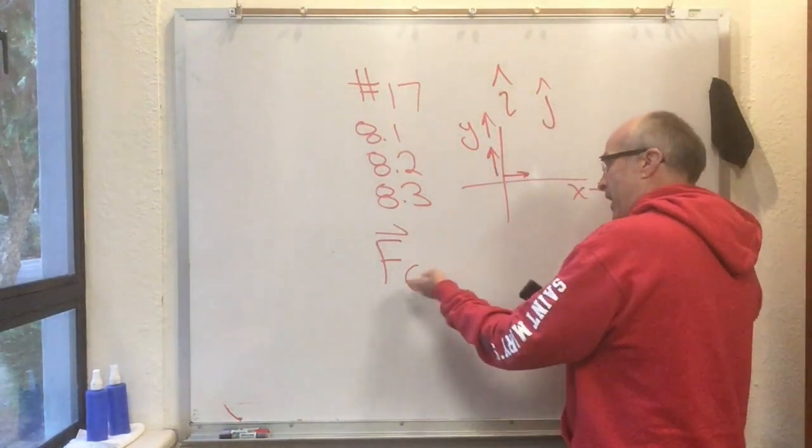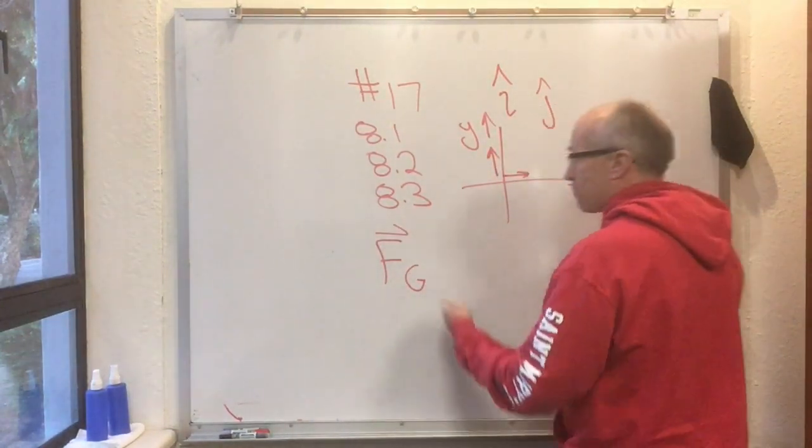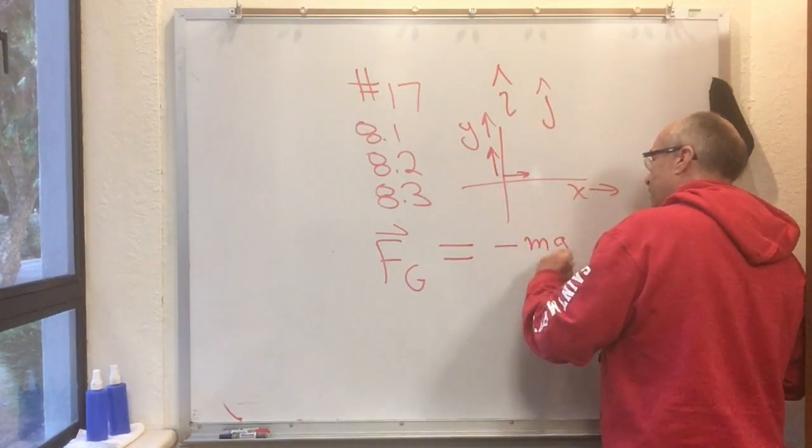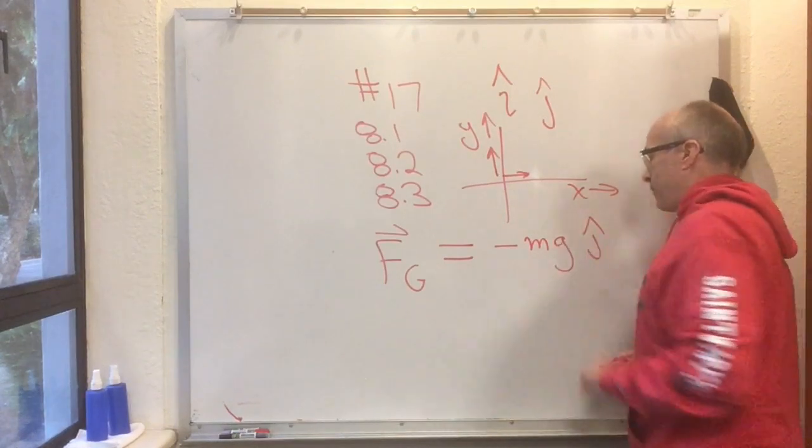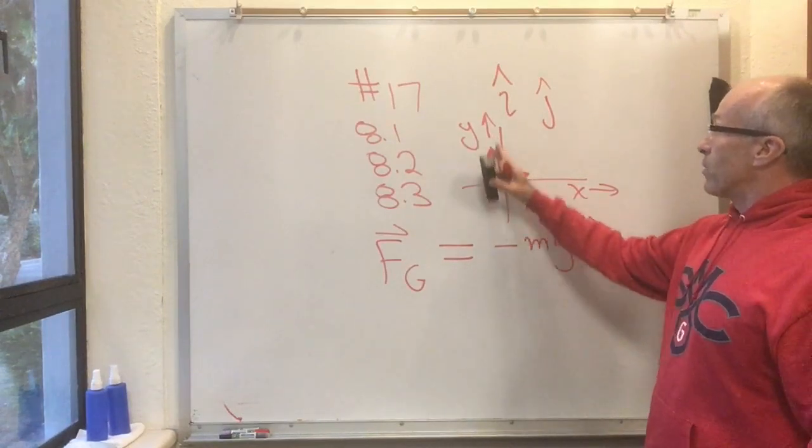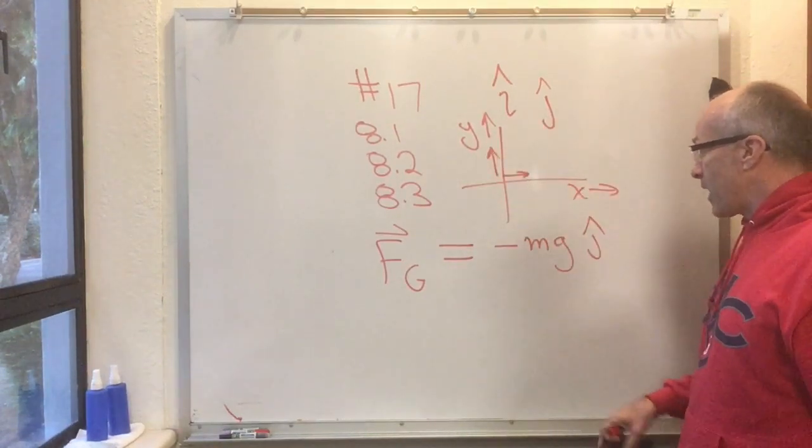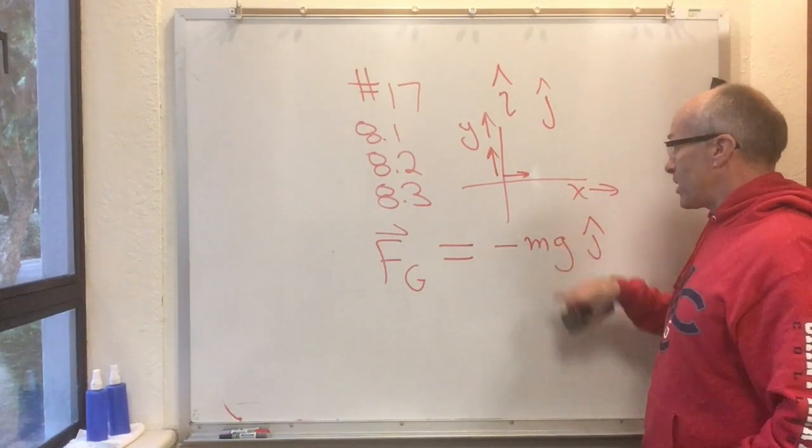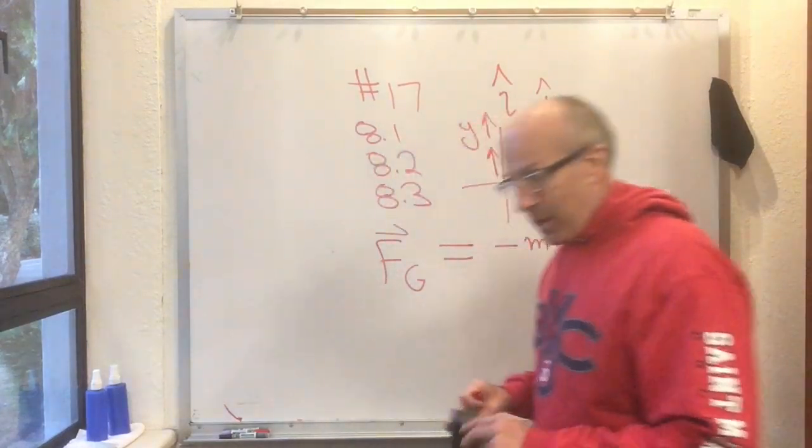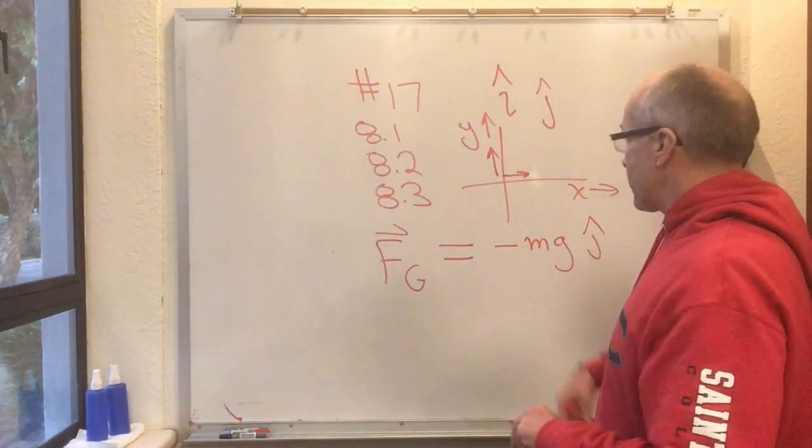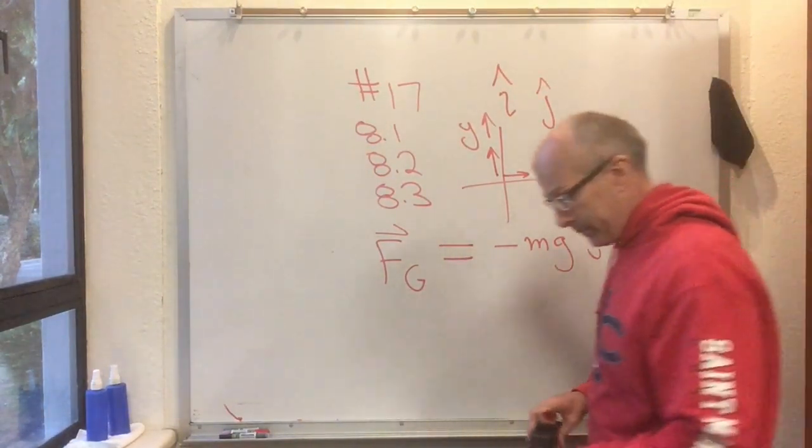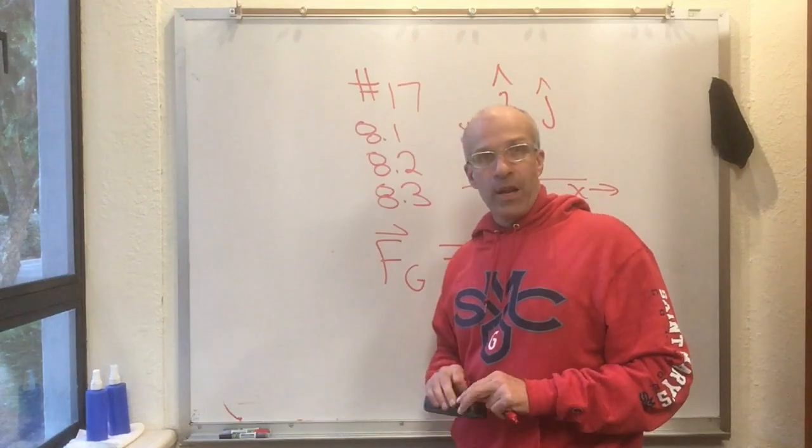Instead of writing the y component of F_g is minus mg, we can write that F_g equals minus mg times j-hat. In other words, it points in the opposite direction of this unit vector j-hat, which points up, and it has magnitude mg. Just more ways of writing things, but it's one more thing in your toolbox and allows you to write the force of gravity vectorially instead of always resorting to components. That covers 8.1.